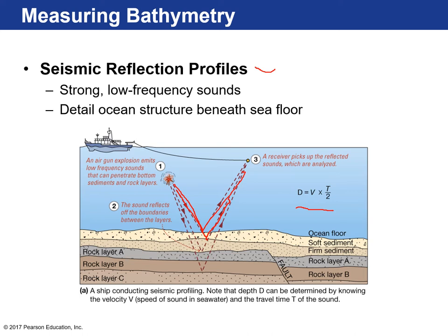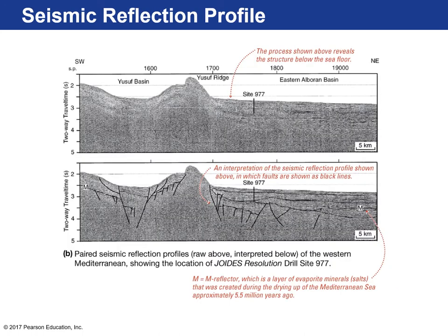This gives us an idea of what's below the surface: the ocean floor, very soft sediment, more firm sediment, and then rock layers. Here's an actual seismic reflection profile — a cross-section of the ocean floor. The velocities of the seismic wave increase or decrease as they travel through different materials, allowing you to draw the different layers.